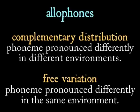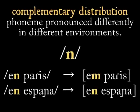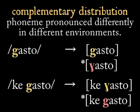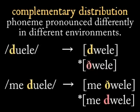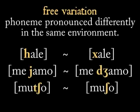But what about sounds that don't contrast? As you listen more closely to Latin American Spanish, you'll notice that the pronunciation of many of these phonemes varies depending on context. You'll hear N pronounced as M in 'en París,' but not in 'en España.' You'll hear 'gasto,' but not in isolation — 'qué gasto,' not 'qué gasto.' You'll hear 'duele' and 'me duele.' You'll hear 'vaca' and 'la vaca.' On the other hand, you'll hear some speakers say 'jale' and others 'yale,' some say 'me llamo' and others 'me llamo,' and some 'mucho' but others 'mucho.'